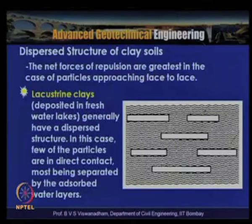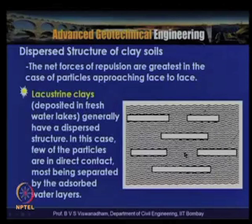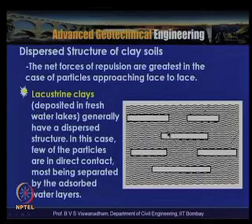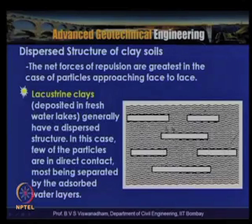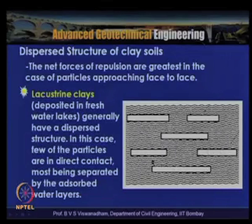An example of dispersed structure is lacustrine clays deposited in fresh lakes, which generally have a dispersed structure. In this case few of the particles are in direct contact, most being separated by the adsorbed water layers. The dispersed structure is shown schematically, and is predominant in lacustrine clays deposited in freshwater lakes.